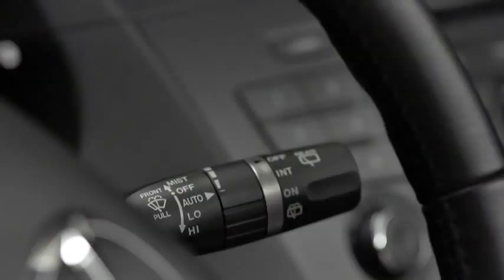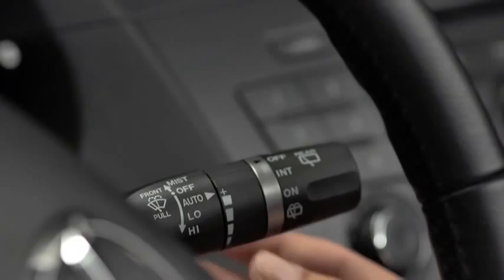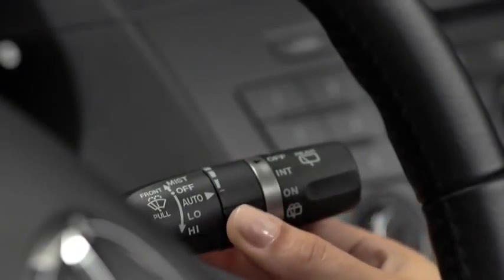The sensitivity of the rain sensor can be adjusted by turning the inner ring on the wiper lever. Rotate the ring upward for a faster response or rotate it downward for a slower response.